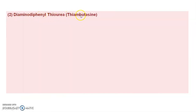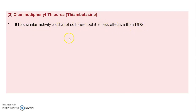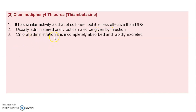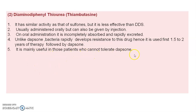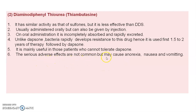The next drug is diaminodiphenyl thiorea, also known as Thiambutasin. It has similar activity to the sulfones but is less active than DDS. Usually administered orally, it can also be given by injection. On oral administration it is incompletely absorbed and rapidly excreted. Bacteria rapidly develop resistance to this drug, so it is used for the first 1.5 to 2 years of therapy, followed by Dapsone. It is mainly useful in patients who cannot tolerate Dapsone. Serious adverse effects include anorexia, nausea, and vomiting.